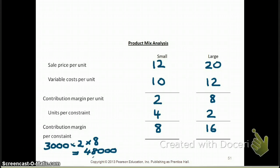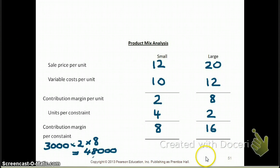For those who know math well, there is another way to calculate it: you have 3,000 machine hours per month, and each machine hour provides $16 in contribution margin. Therefore, 3,000 multiplied by $16 also gives you $48,000.